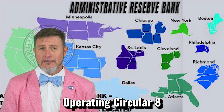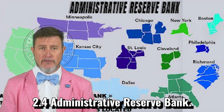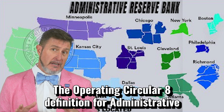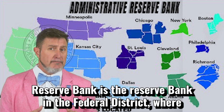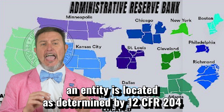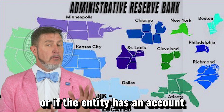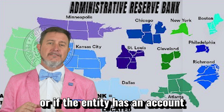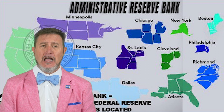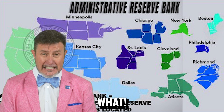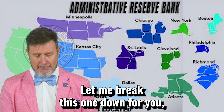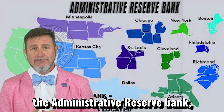Operating Circular 8, 2.4 — Administrative Reserve Bank. The Operating Circular 8 definition for Administrative Reserve Bank is: the reserve bank in the federal district where an entity is located, as determined by 12 CFR Part 204, or if the entity has an account at a different reserve bank, then that bank.